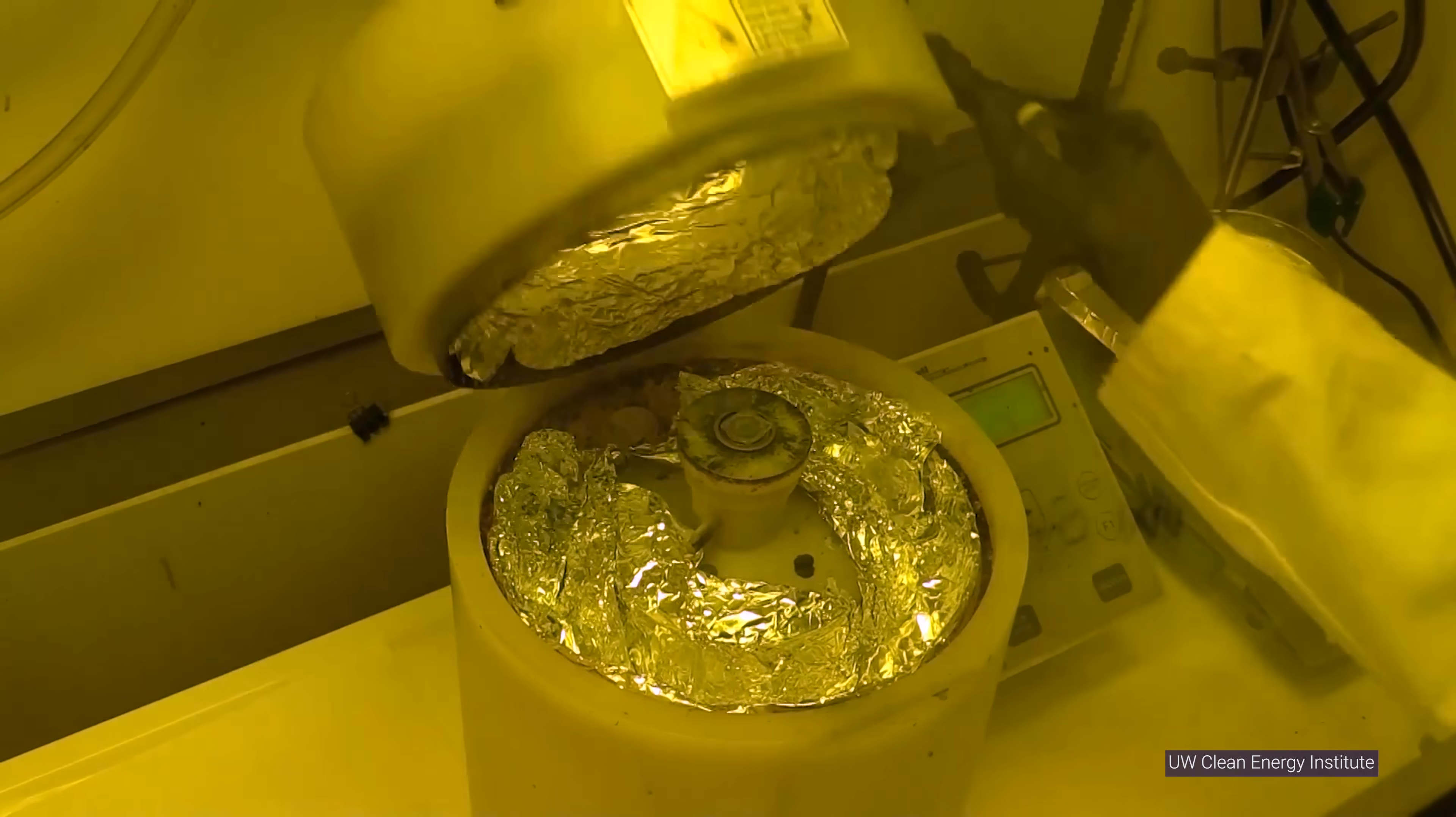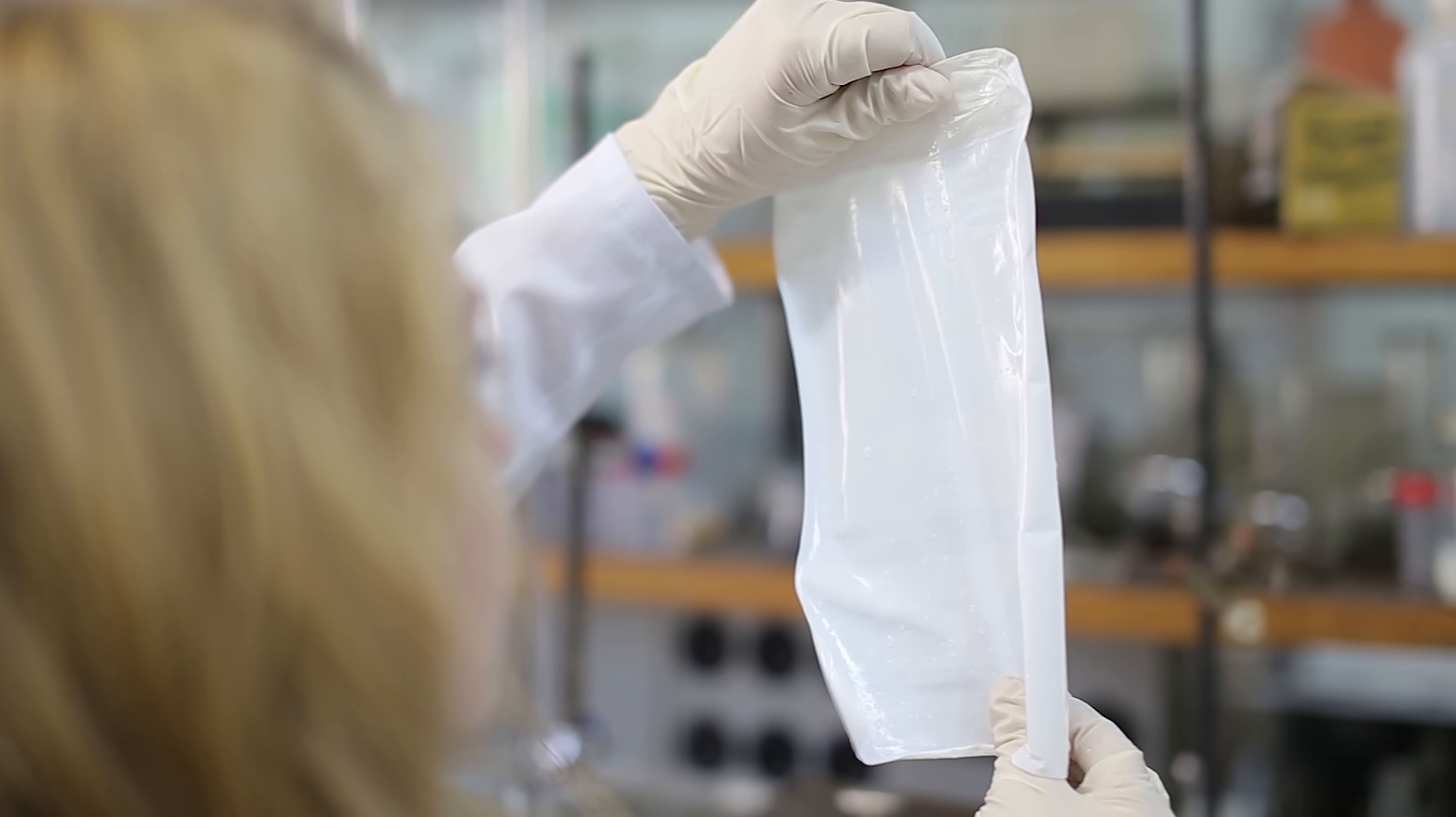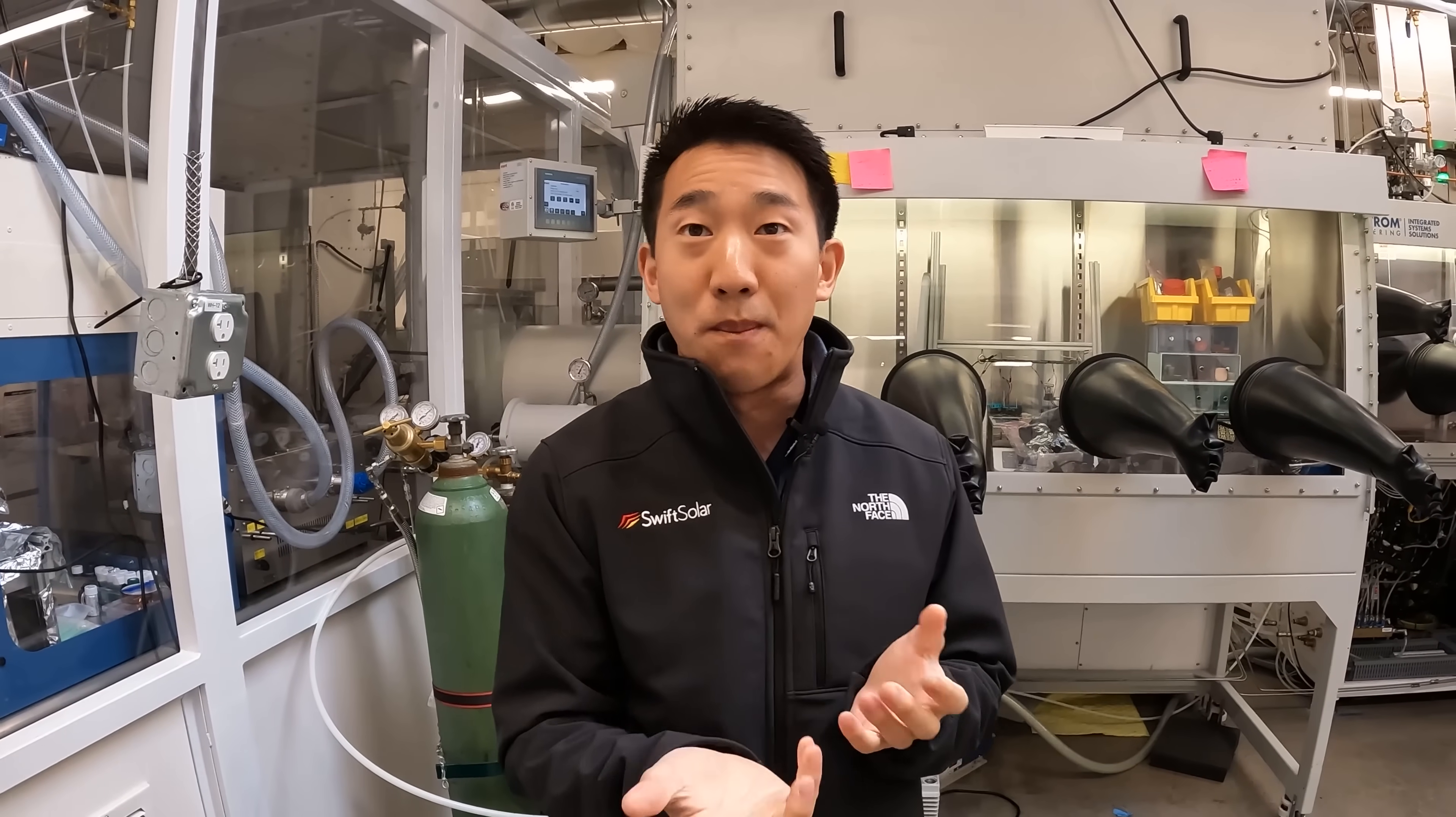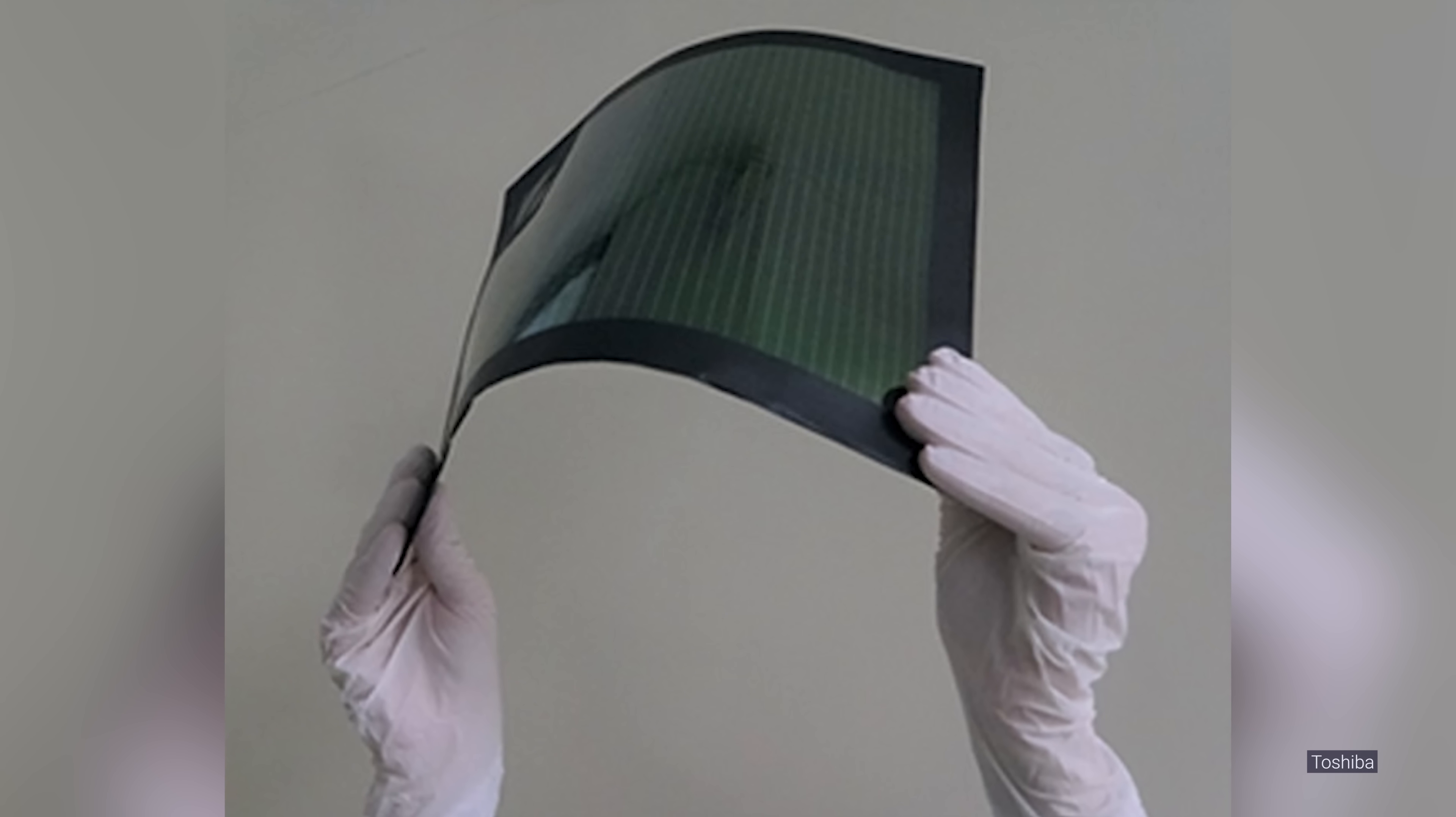So that means that you can actually use smaller equipment, you can use more standard chemical processes, and you can form these solar cells on things like plastics. So things that would melt under high temperatures you can actually use to make solar cells on. So you can make something really lightweight and flexible as well.